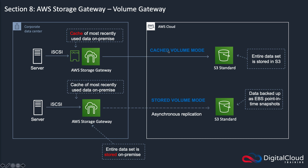In cached volume mode, the entire data set is stored in S3, and only a cache is stored locally on-premises. So in cached mode, the cache is on-premises and everything else is in S3. Whereas in stored volume mode, the entire data set is stored on-premises, and it's backed up as snapshots to S3. So in stored mode you're using S3 as a backup, but your primary data is local. In cached mode, S3 is your primary storage and you cache recently used data locally for low-latency access.